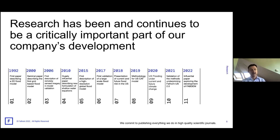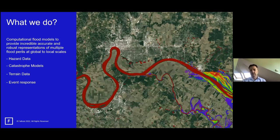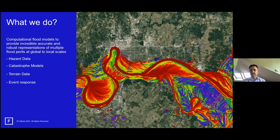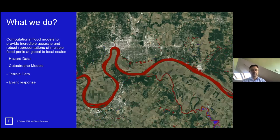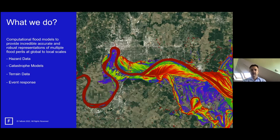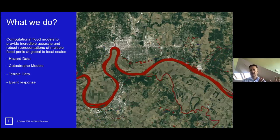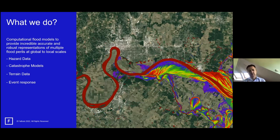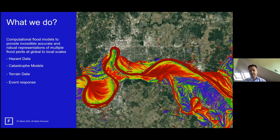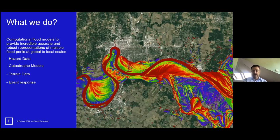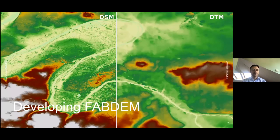Being transparent around the science and methodologies is really important for our partners and clients to understand how we've developed the models, where the models work, and to build confidence that they can trust the methodologies. At Fathom we build computational flood models, taking a big data approach at global, country, and regional scales. We develop hazard maps, catastrophe and stochastic models to understand financial loss due to flooding, and we create good terrain data — which is what FAB DEM is about.